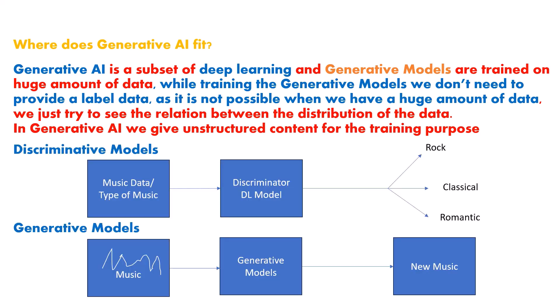Let's compare discriminative and generative models with a music example. For a discriminative model: I have labeled music data, I train my discriminative model on it, and it classifies whether a song is rock, classical, or romantic music — that's classification. For a generative model: I train on different kinds of music without labels. Based on the distribution, the generative model generates new music or completes a music line. If I give it an initial tune, it will complete the remaining tune.